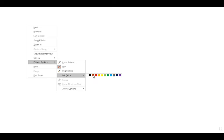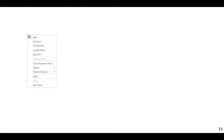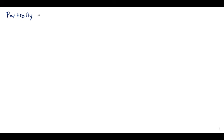Now let us consider the partially plastic case. As we saw in torsion, the strain is always going to be linear and elastic in distribution, but the stress will actually cap out at a certain value — the yield stress. The strain will just keep on increasing, but the stress caps out.